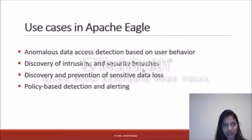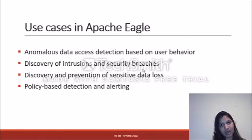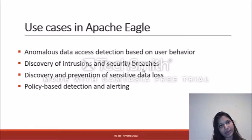There are four main use cases implemented in Apache Eagle. The first is anomalous data access detection based on user behavior. If a user who is not authorized or who generally doesn't access a certain set of data tries to access it, that's an anomaly. For example, a person from a financial department accessing marketing data — someone using his credentials is trying to access it.